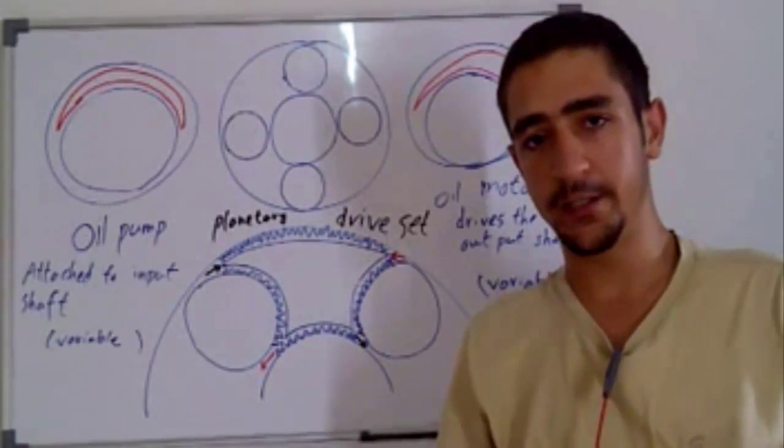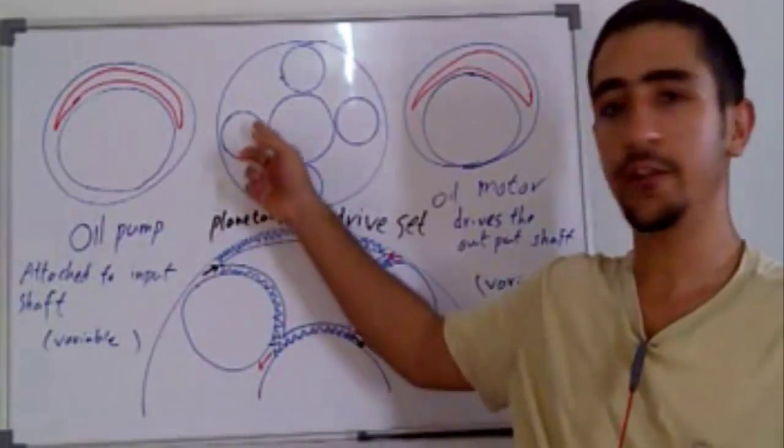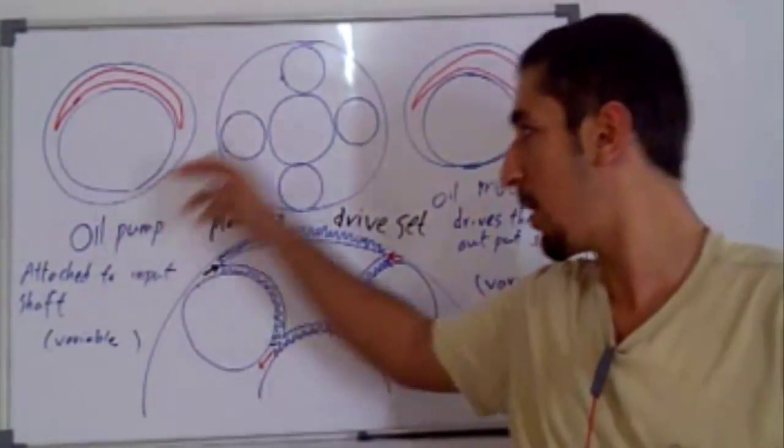Hello and welcome to Wolfsburg. In this episode, we are going to discuss how we can get a full driving transmission from a single planetary gear with an oil pump and an oil motor.